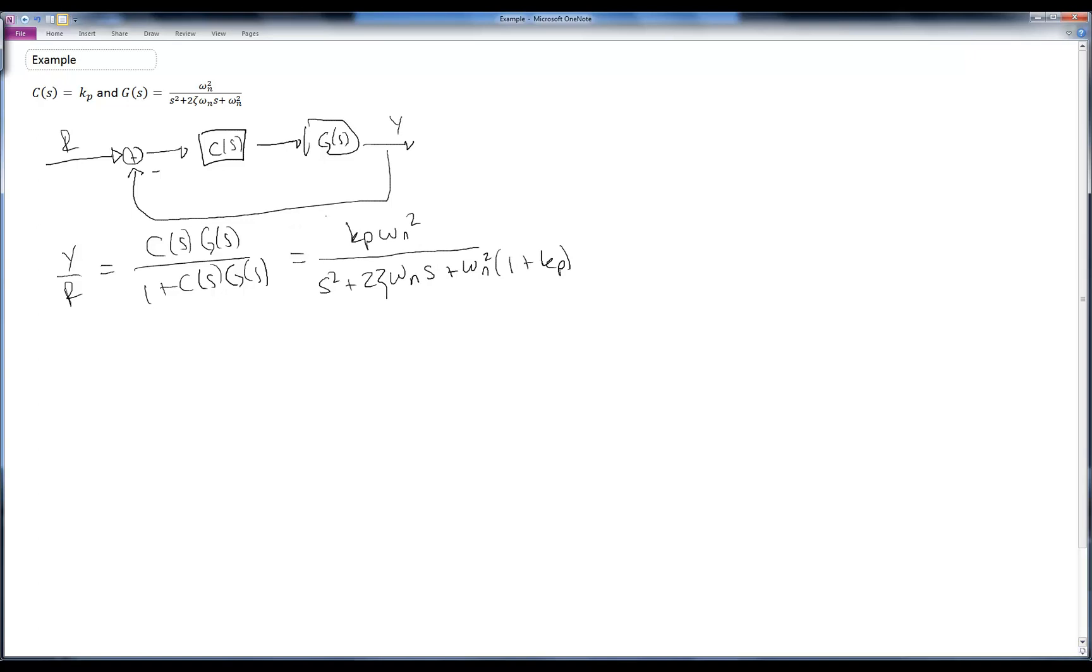So the effect of adding this gain, kp, is that we get a gain in the numerator, and we affect the stiffness down here in the denominator. And what we want to look at is what happens to s squared plus 2 zeta omega n s plus omega n squared times 1 plus kp, which is the characteristic equation of the closed loop system. And I set that equal to 0, and we want to know what happens as kp goes from 0 to infinity.